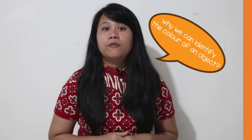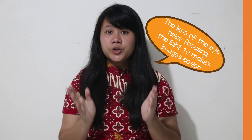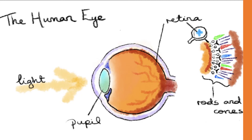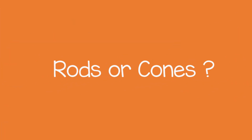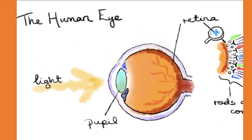Back to the question: why can we identify the color of an object? Our eyes are amazing and allow us to detect light, focus on images, and see what is around us. The lens of the eye helps focus light to make images clearer. Some parts allow us to detect light, and other parts help us see the shape of an object. The part that functions to detect color is the cones.